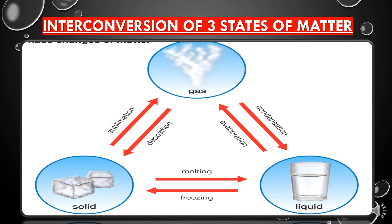If a gas on cooling or on applying high pressure directly converts into solid without changing into liquid, the process is called deposition. By altering conditions of temperature and pressure we can convert one state of matter into another. This interconversion is naturally occurring — water exists in all three states naturally: as solid (ice), as liquid (water), and as gas (water vapor).